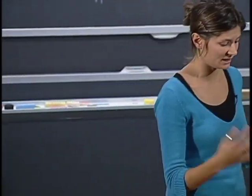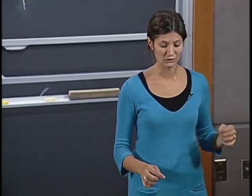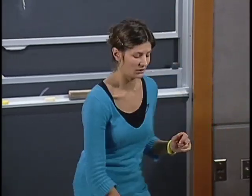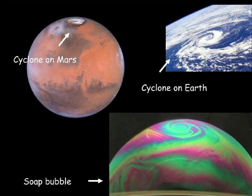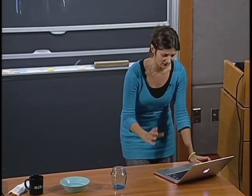And you will see that these vortices are very similar to, for example, cyclones on Earth or cyclones on Mars. And this indeed inspired a group of physicists who were using soap bubbles as models of cyclones on planets.